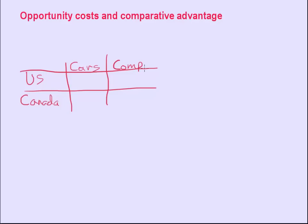Let's assume we have the US. Let's assume we have Canada. Let's look at cars. Let's look at computers. The shorthand for computers is just COMP. Let's assume that the US has an absolute advantage in cars and computers. We produce everything more productively than Canada.